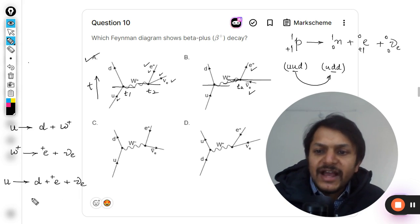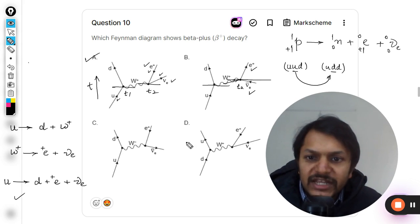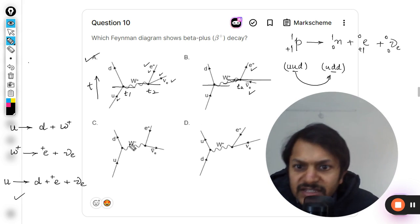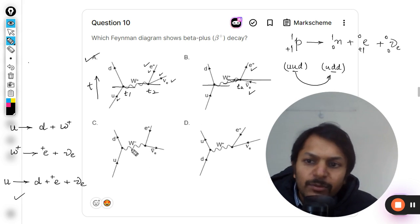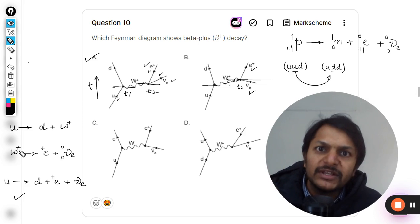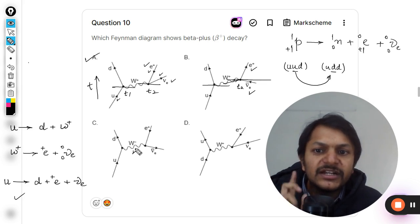Let us go for option C now. This is W minus. Why do you think that W minus will be there? This is having plus one charge and W boson is having plus one charge, so charge is conserved in A. But in C, if you are creating W minus, the charge is not conserved at t1 as well as at t2.